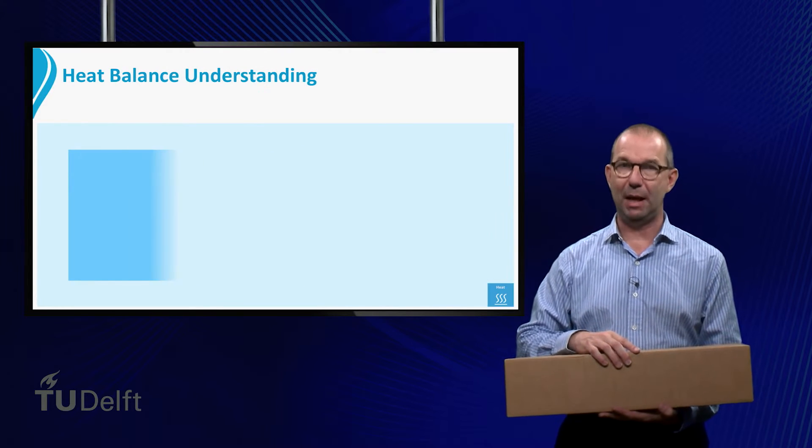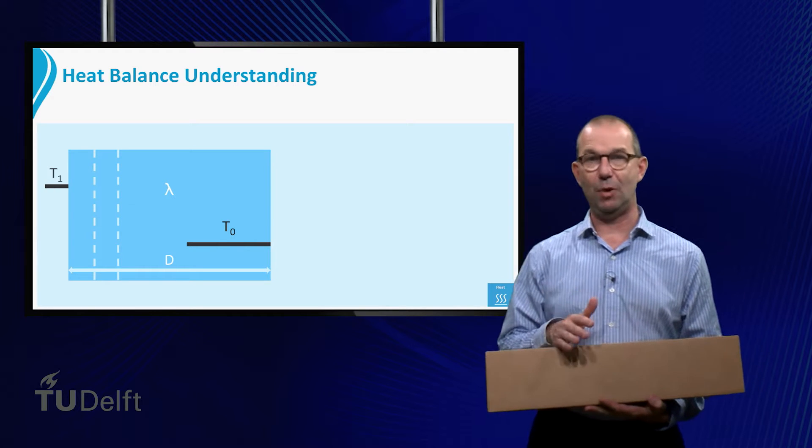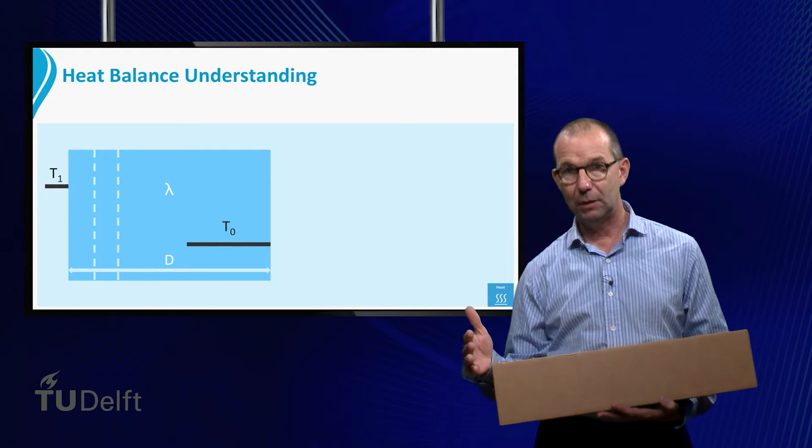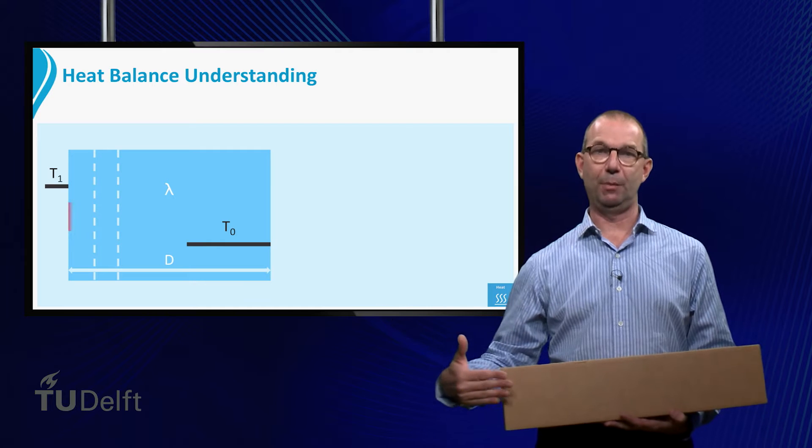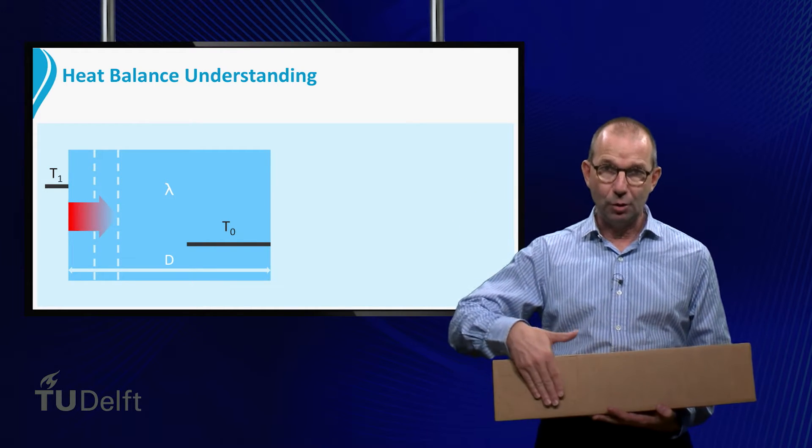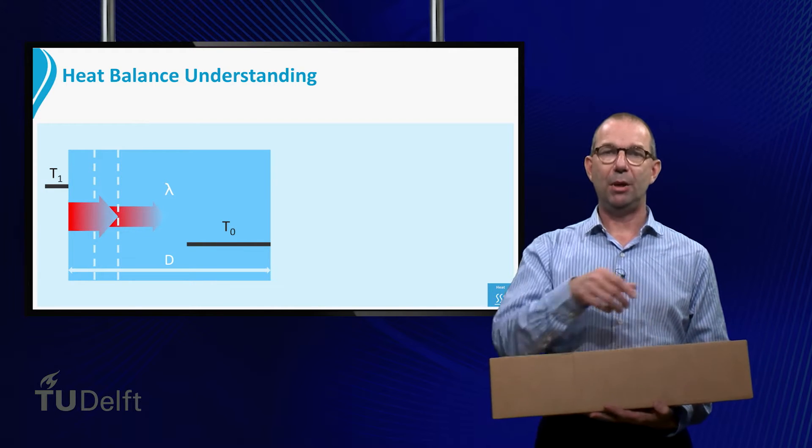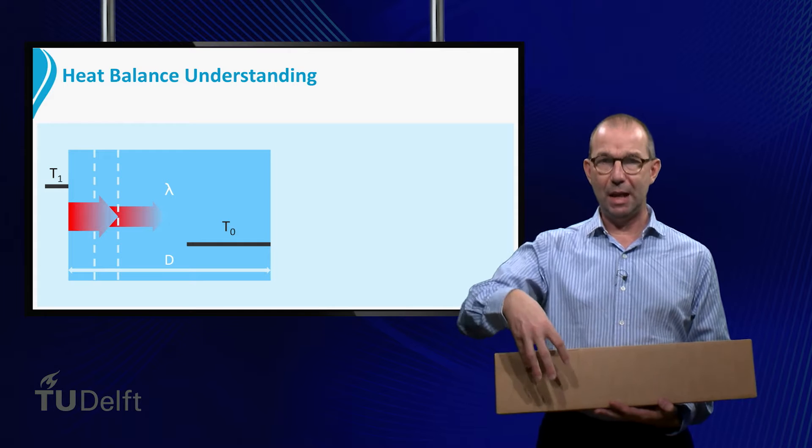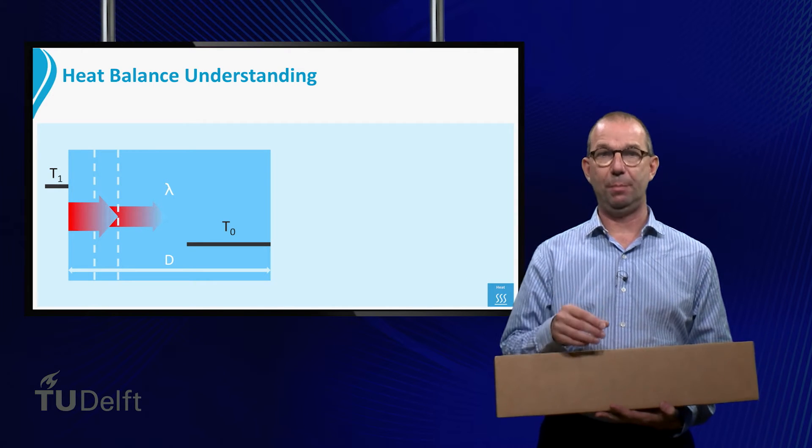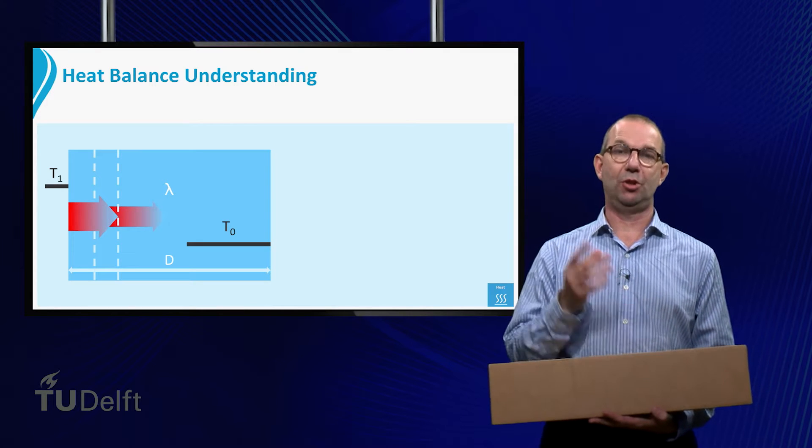In order to understand this, we set up a heat balance for a small strip in the plate. The strip is relatively close to the left. Heat will be flowing in from the left as that part is warmer. Heat will flow out from the right as that part is colder. But also some heat will be left behind to warm up the strip as eventually everything will be warmed up to a temperature T1.